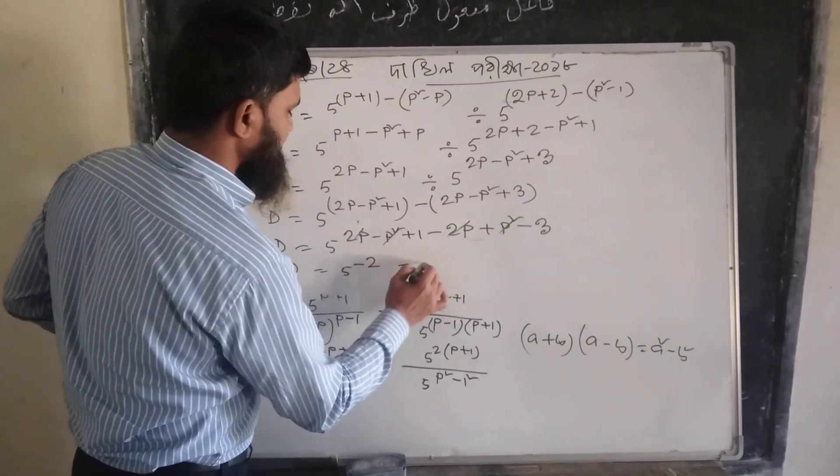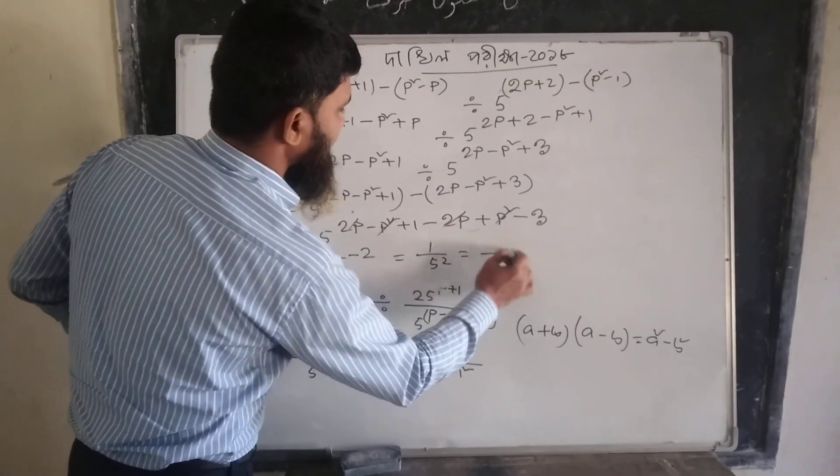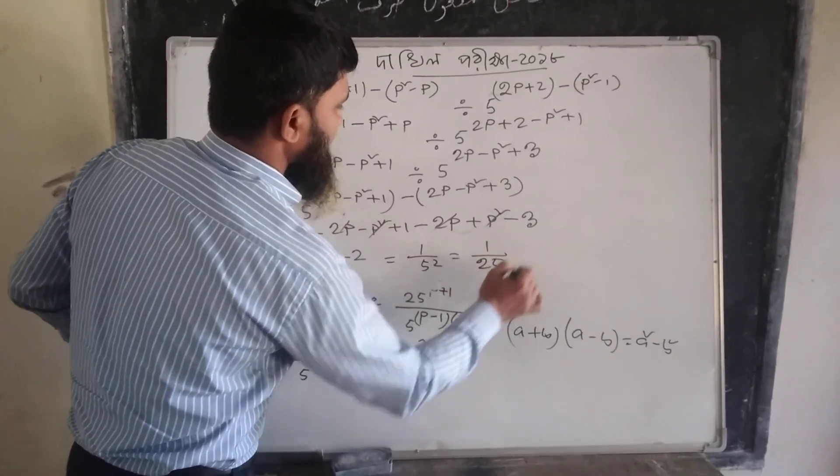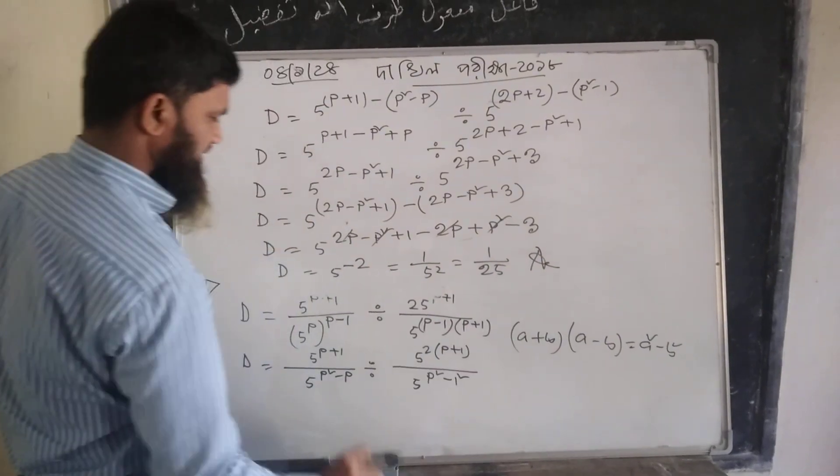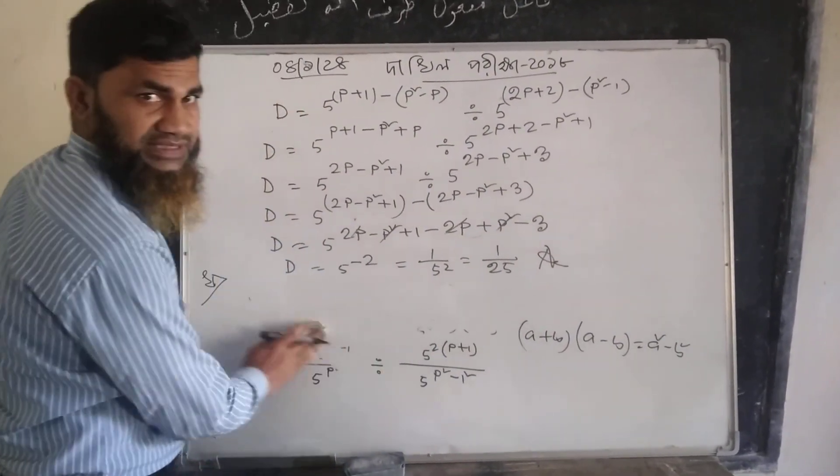That is, 1 by 5 square. That is, 1 by 5 square. It is answered. It is answered.